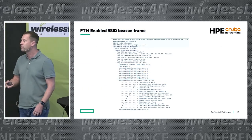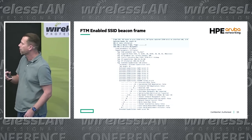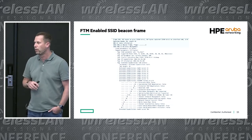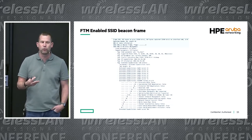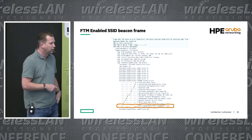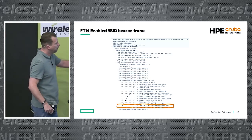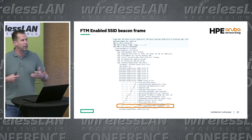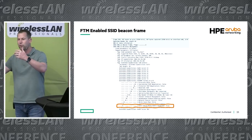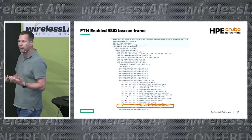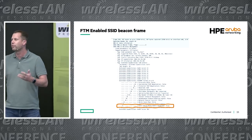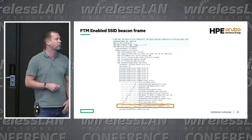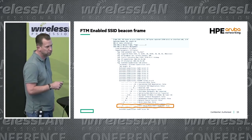How can you see in a beacon whether a responder is enabled? In the beacon field you can see 'fine-time measurement responder' set to true, meaning that AP is a responder and can help you. That's how you confirm it's enabled — pretty easy and useful for troubleshooting.